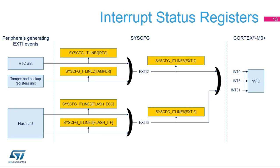The left part of the figure represents the peripherals able to assert EXTI2 and EXTI3 — respectively RTC, tamper, and flash memory units. Regarding EXTI2, RTC and tamper interrupt requests are OR'd together. Regarding EXTI3, flash memory ECC and flash interface interrupt requests are OR'd together. Furthermore, EXTI2 and EXTI3 interrupt requests are also OR'd together to generate interrupt number 5, received by the Cortex-M0+ NVIC.